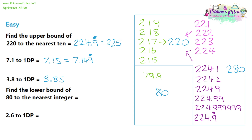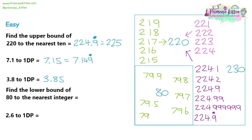So we have 79.9. What else? 79.8, 79.7, 79.6, 79.5 would all round up to 80. But when we come to 79.4, that would actually round down to 79 — so that's too small. Now 79.5: if we go down by another decimal place, 79.49 would start rounding down, so we can't go that low. And 79.51 is actually larger than 79.5. So 79.5 is going to be our answer — the lower bound, the lowest number that rounds up to 80.